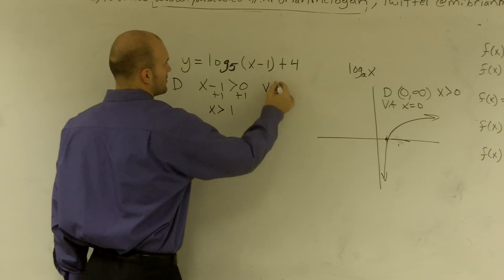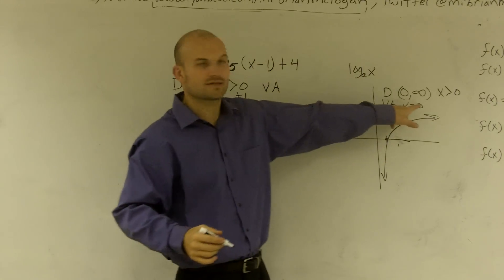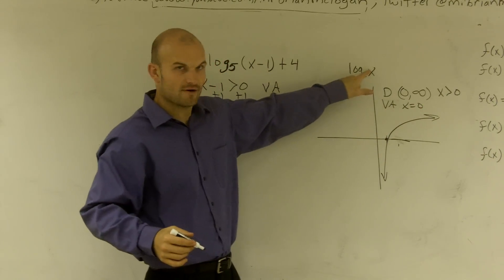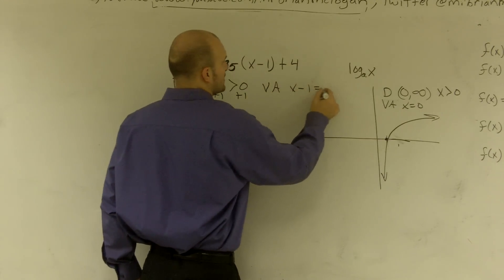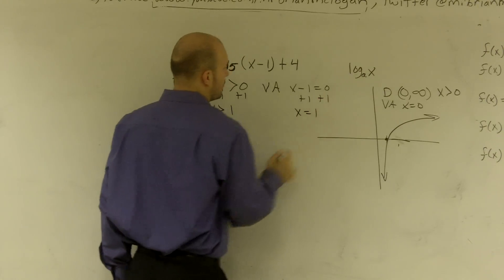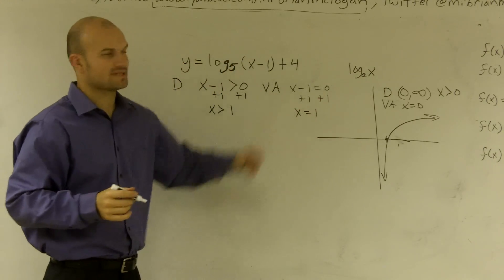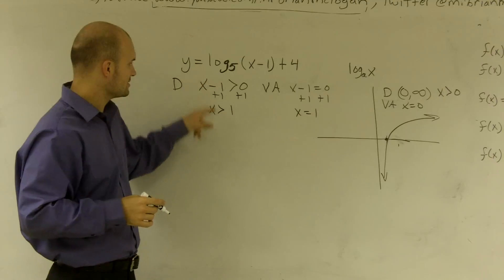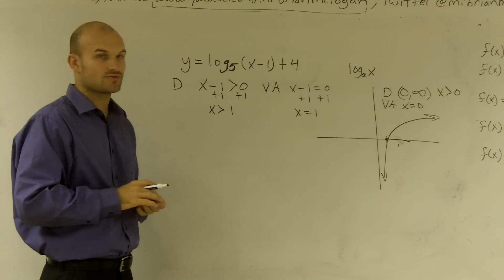To find my vertical asymptote, we know that for the basic function x equals 0. But now I have x minus 1 equals 0, so I add 1 and get x equals 1. So my vertical asymptote is x equals 1, and my domain is x greater than 1.